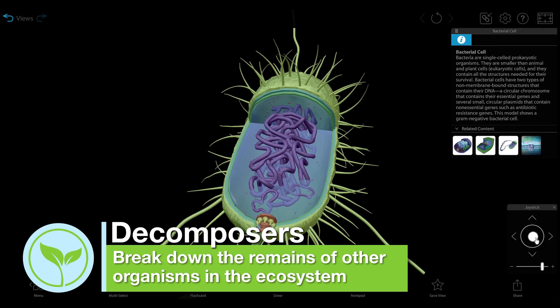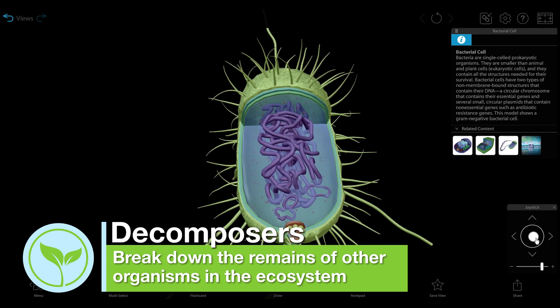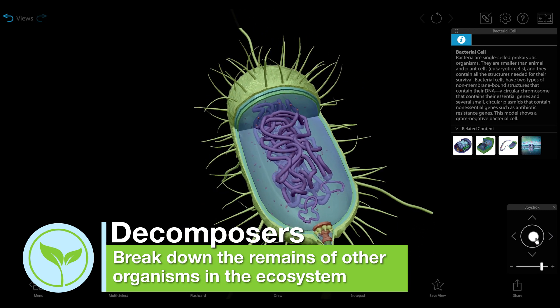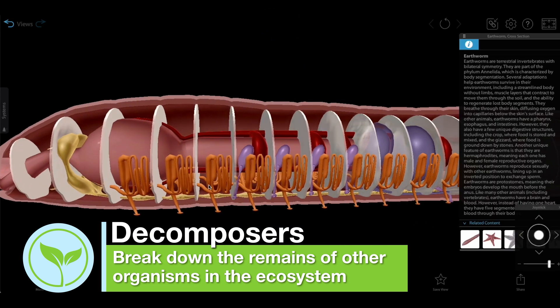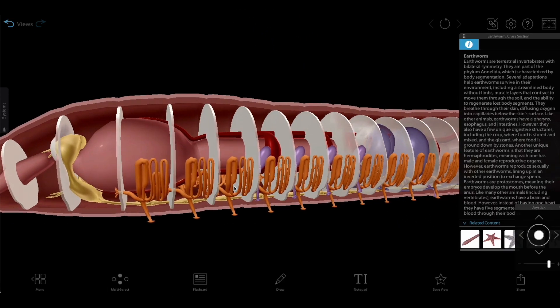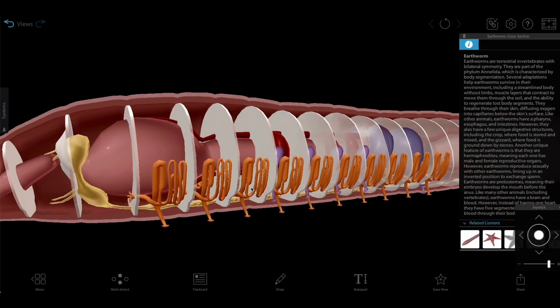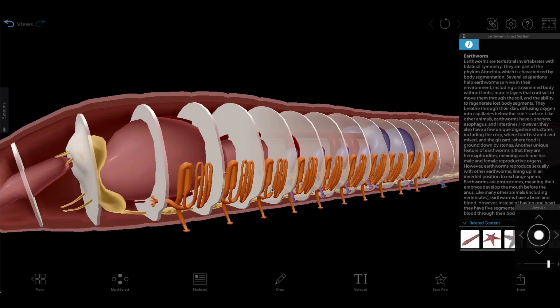Decomposers — bacteria, fungi, and some invertebrates — break down the remains of other organisms in the food web into basic nutrients.